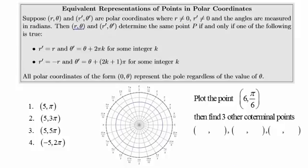Then r theta and r prime theta prime determine the same point P if and only if one of the following is true. The radiuses are the same sign and one of the angles is an even multiple of pi greater. Or if the radiuses are opposite in sign and one of the angles is an odd multiple of pi greater.